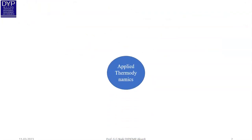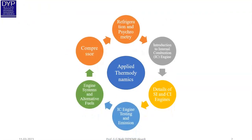Applied Thermodynamics is divided into six units. The first unit is Refrigeration and Psychrometry, in which we are going to study refrigeration and psychrometry in detail. The second unit is Introduction to Internal Combustion Engines, also called IC engines, where we will study IC engines and their classification.